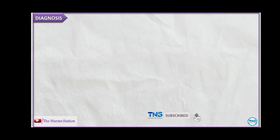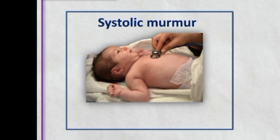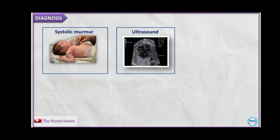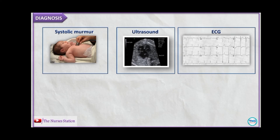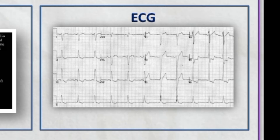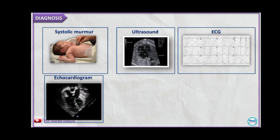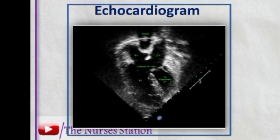For diagnosis of the AV canal defect, a systolic heart murmur can be auscultated — it is typically noted in the first one or two weeks of life and is often the first clue that the defect exists. Ultrasound can detect the AV canal defect in a baby before birth. An ECG reveals abnormal heart activity. An echocardiogram can reveal a hole in the heart, abnormal heart valves, and abnormal blood flow through the heart.